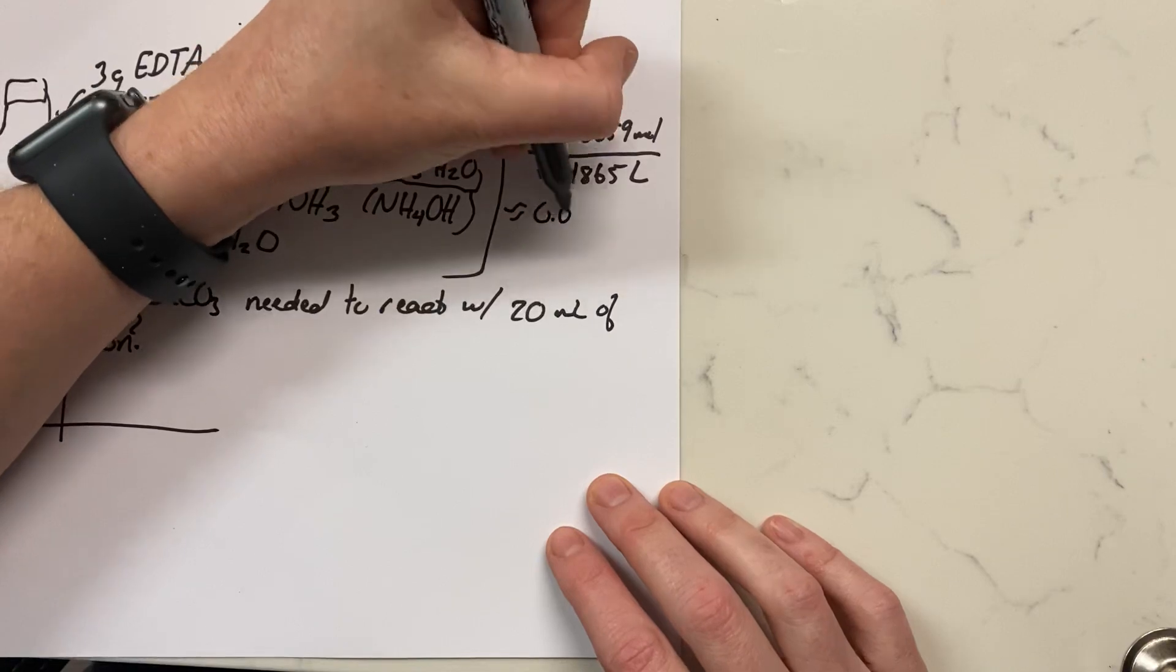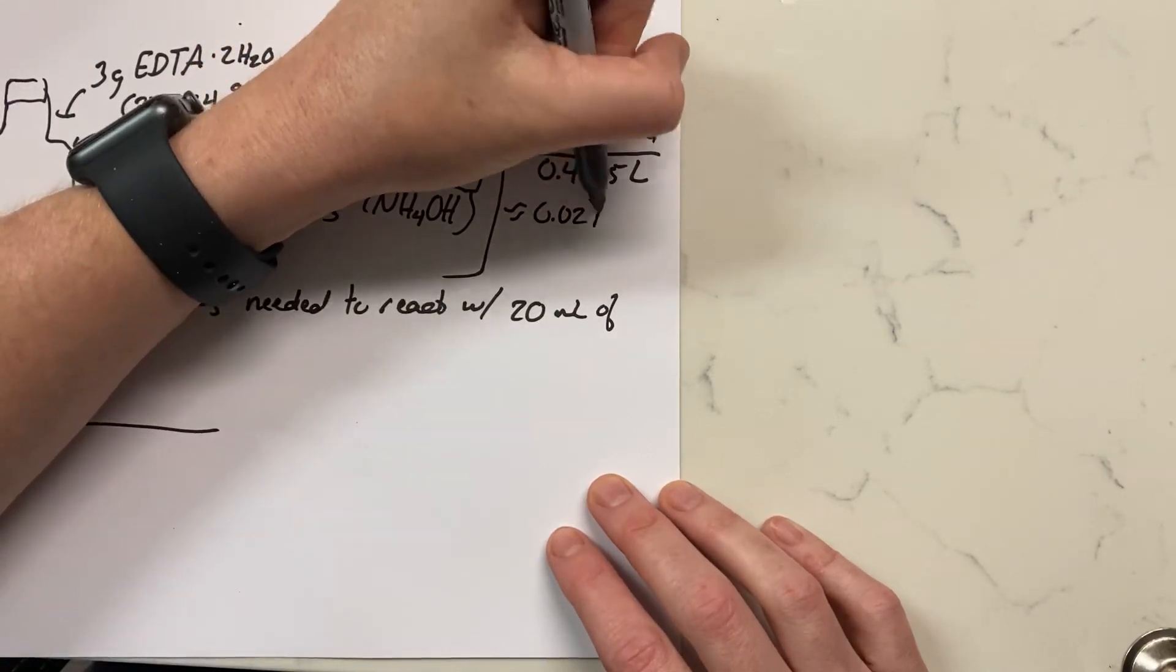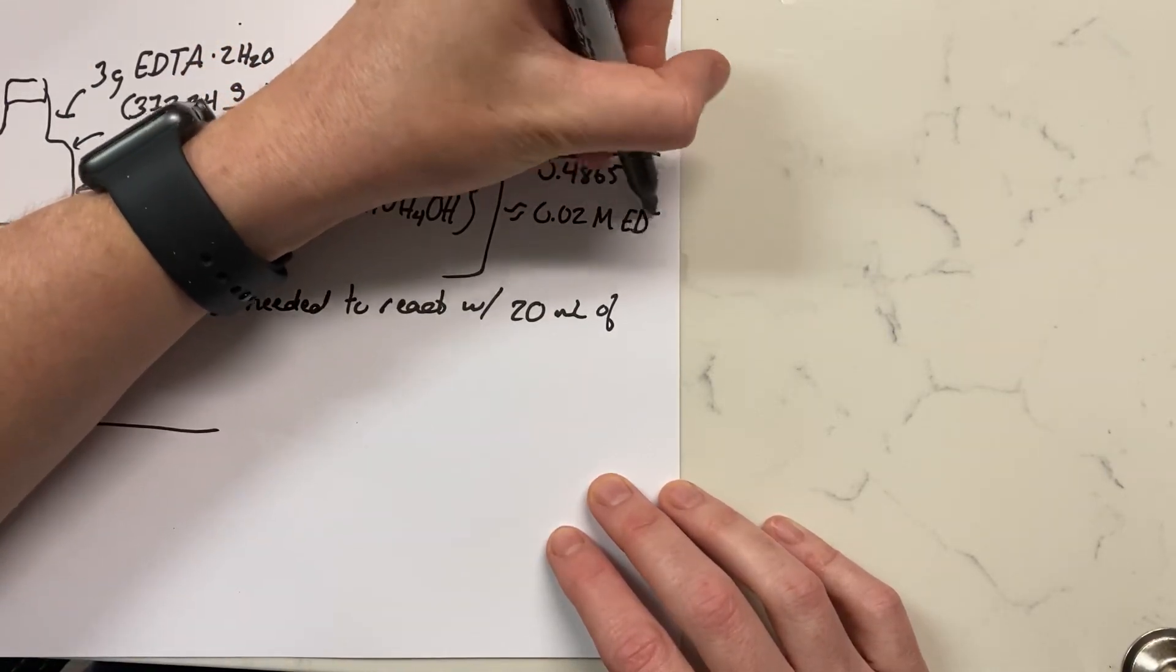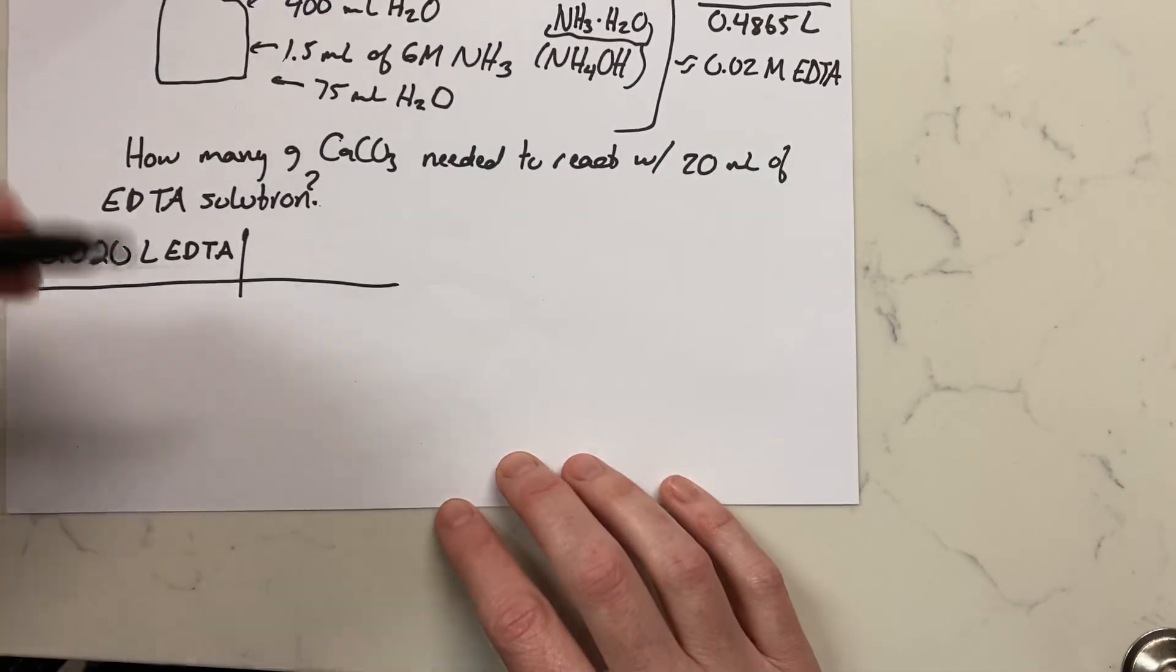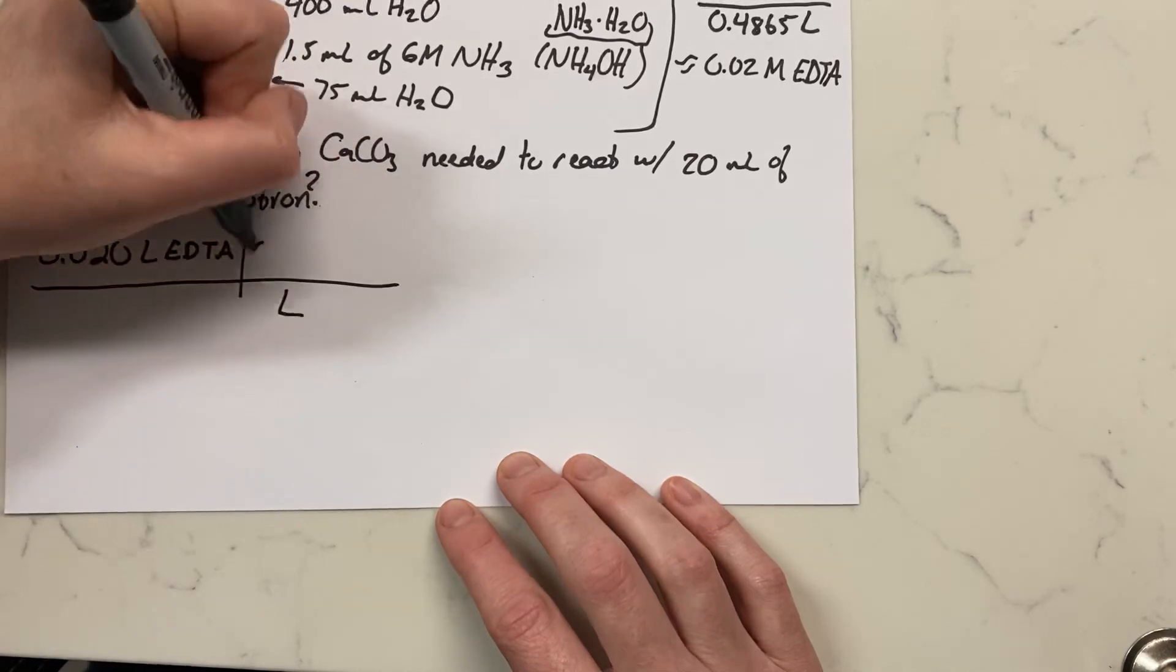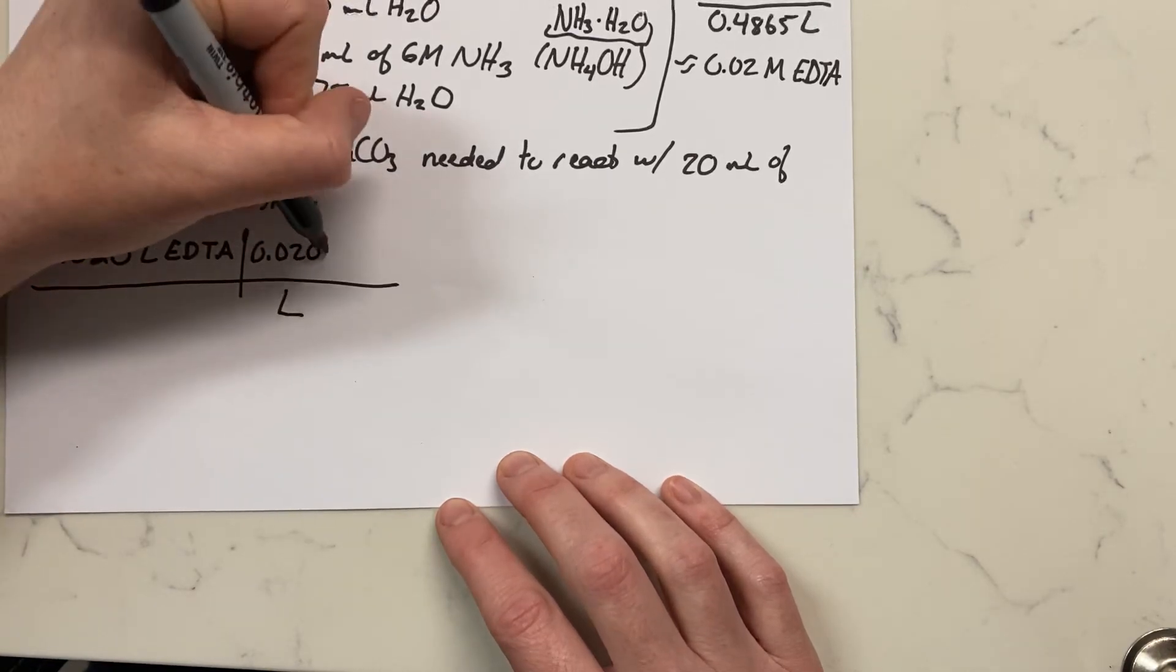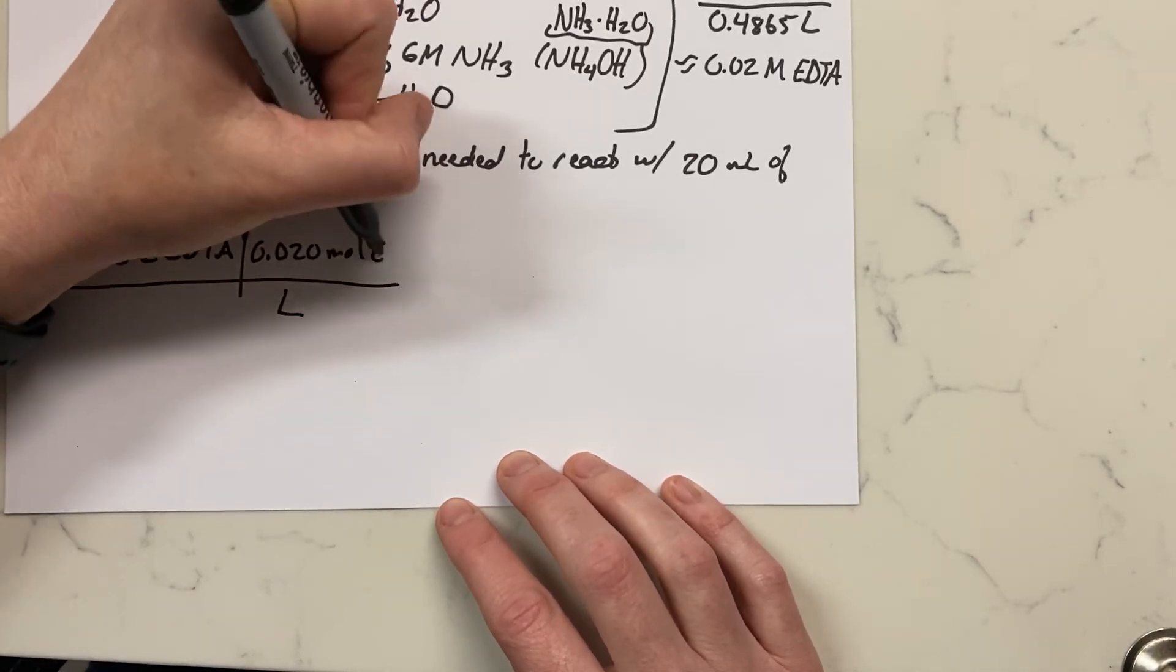This gives us an answer of about 0.02 molar EDTA. So now when we go down here, we're starting with 0.020 liters. Well, we know a liter of it has 0.020 mole of EDTA because we need the concentration.